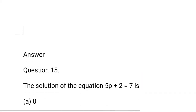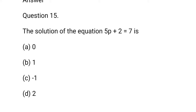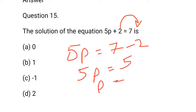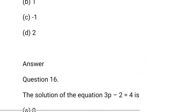Question number 15: The solution of the equation 5p plus 2 is equal to 7. So, 2 goes to RHS and is subtracted. So, 5p is equal to 7 minus 2, that is 5. So, 5p equals 5, and p is equal to 5 upon 5, that is 1. b option is correct.